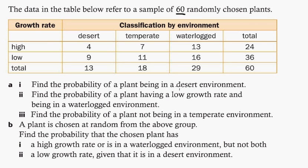Find the probability of a plant being in a desert environment. Well, a desert environment is here, there's 13 of them. And the probability is part out of total, so it's just going to be 13 out of 60. And you don't need to turn it into a decimal or anything like that, you don't need to reduce the fraction, that's fine. And I'm just going to switch colors as I go here. Let's go for this one, we'll do it in blue. Let's do this one in green.